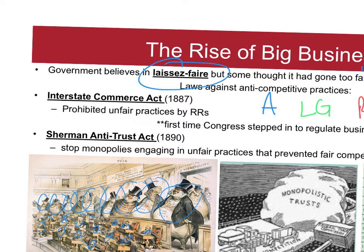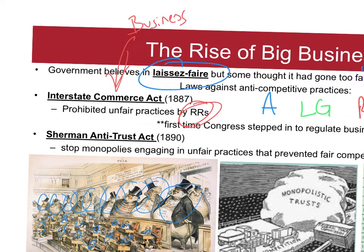Railroads were using unfair practices — charging clients whatever they thought they could get away with, not based on actual shipping costs. It became so unfair that Congress passed the Interstate Commerce Act. 'Commerce' is just a fancy word for business — it's essentially an interstate business act. And it is constitutional: the Constitution explicitly gives the federal government power to regulate interstate commerce.